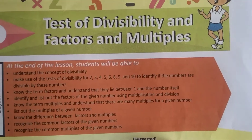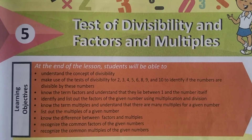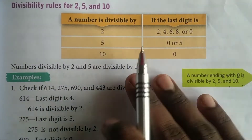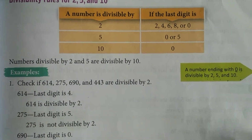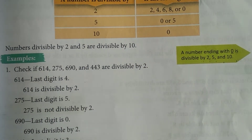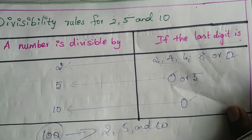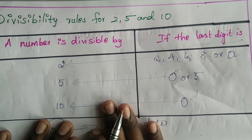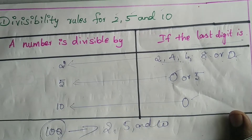Let's move on to lesson 5. Last class we discussed up to the divisibility rule for 2, 5, and 10. Today we are going to continue with that session. Before going to today's class, let's just revise what we discussed last class.